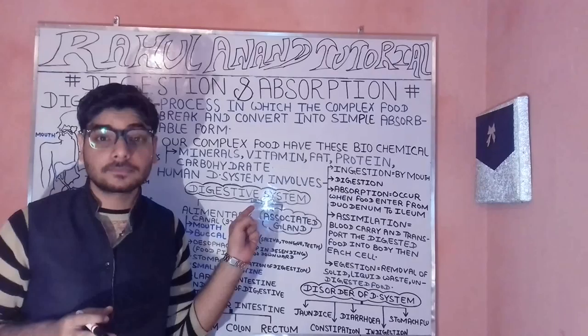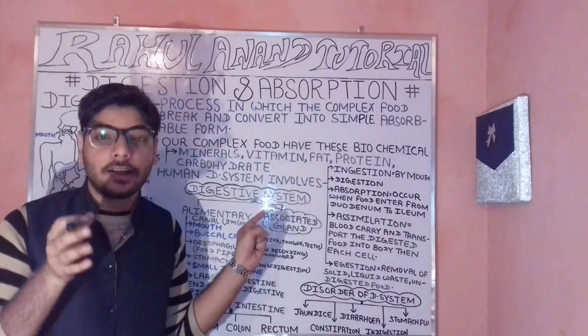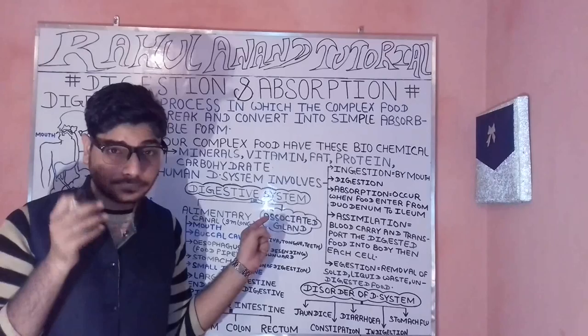Next, we have carbohydrates — CHO. Carbohydrates are optically active polyhydroxy aldehydes as well as polyhydroxy ketones. Write this in your copy — very important.